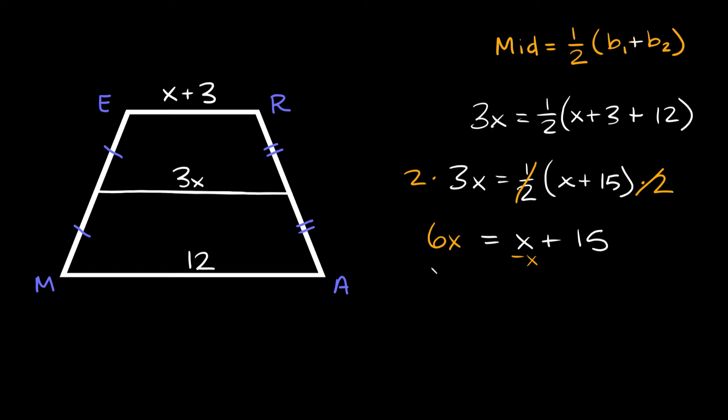So then here, getting the x's on the same side, let's subtract those. So 6x minus x is equal to 5x, so we get that 5x is equal to 15. So here we can see that x must be equal to 3.